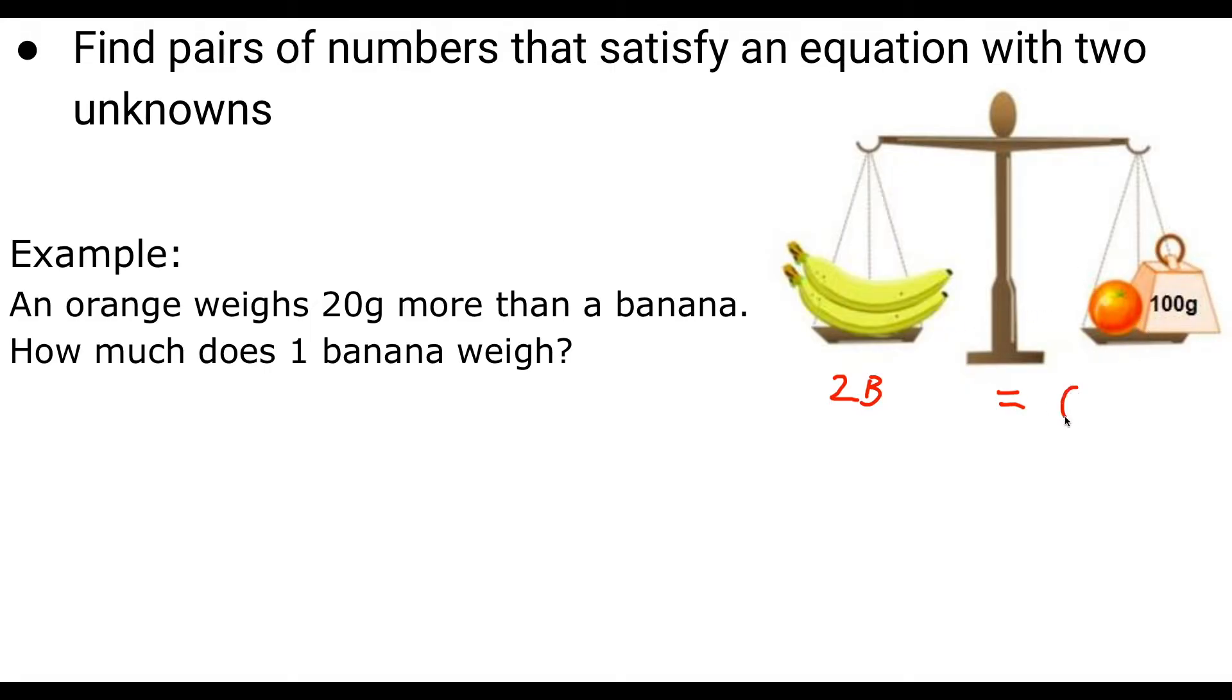Let's use the letter B for bananas. So we have two bananas here. So I would write 2B and that's going to equal, because exactly the same weight as this, is an orange. So I'll use an O but I'll put a line through it just so that we don't get confused and think it's a zero. Plus 100 grams. At the moment, that's all we know is that 2B equals an orange plus 100 grams. They're exactly the same weight.